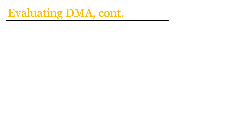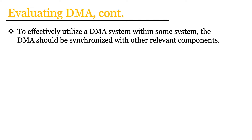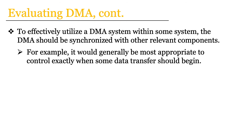Another important thing to note when configuring or designing a system that incorporates a DMA is that to effectively utilize a DMA within some system, the DMA needs to be synchronized with any other relevant components. What that means is that if we wanted to perform some data transfer, one example of synchronization would be controlling exactly when that data transfer begins, because otherwise we might not accomplish what we want for a given application. So generally it makes the most sense to have some method for synchronizing a DMA system.